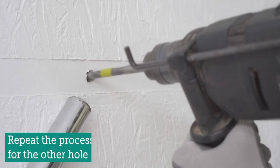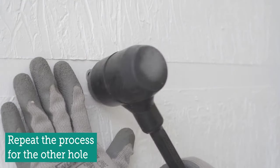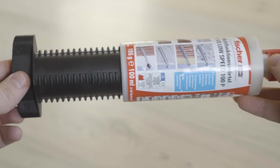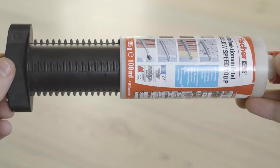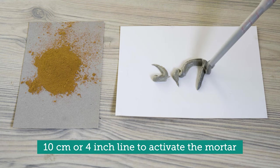We repeat the hole process for the second hole and ensure that both holes are well prepared before we start injecting the mortar. Now is the time to activate the two substances of the mortar by pressing out a 10 cm line on a piece of carton or similar. Make sure you wear gloves and don't let the mortar touch your skin.